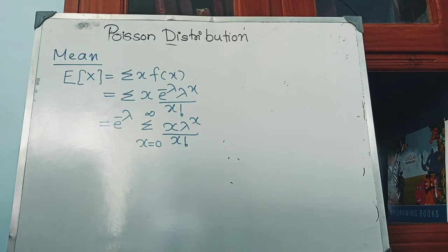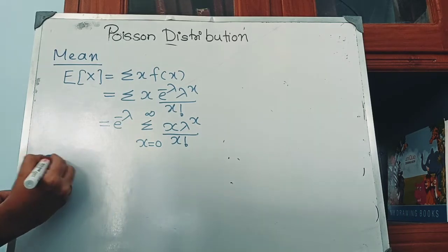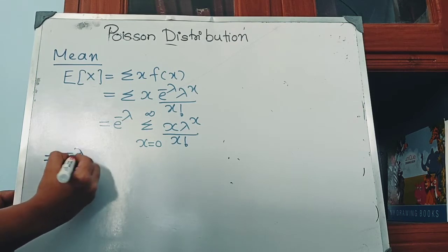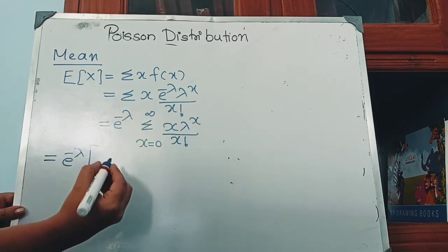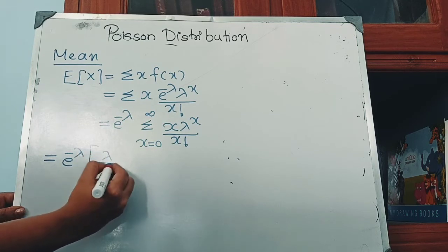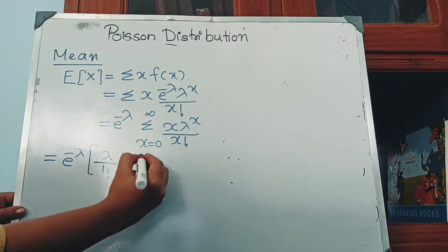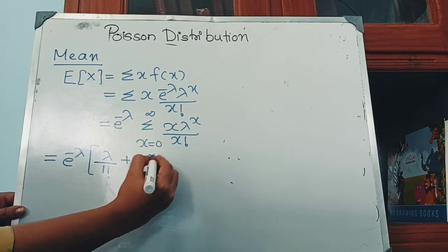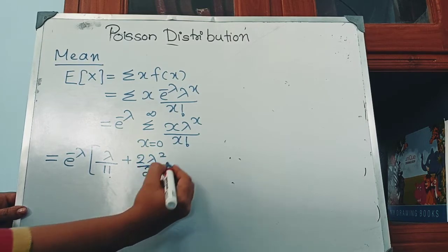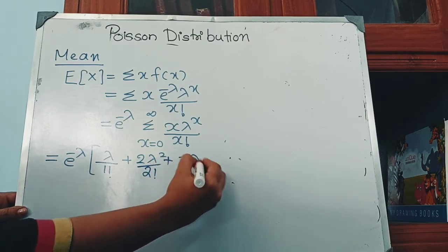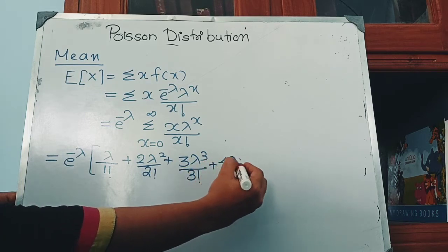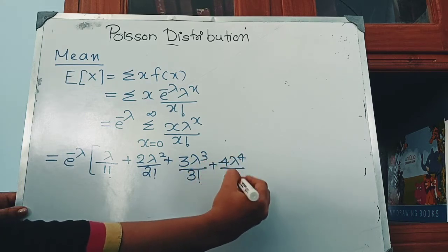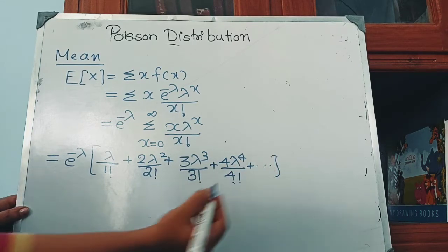Now we will substitute x = 0, 1, 2, etc. When x = 0 this term is 0. When x = 1 we get λ/1!. When x = 2 we get 2λ²/2!. When x = 3 we get 3λ³/3!. When x = 4 we get 4λ⁴/4!, and so on.